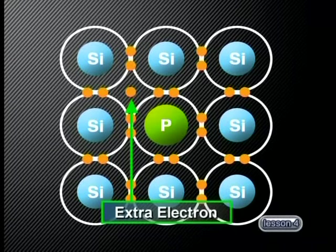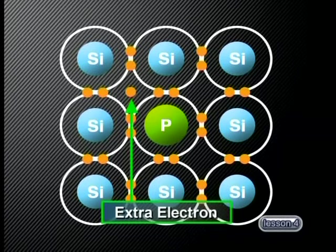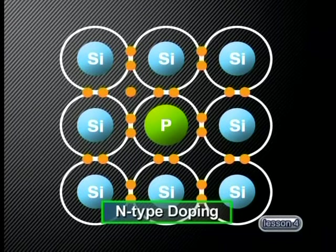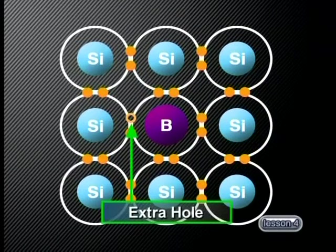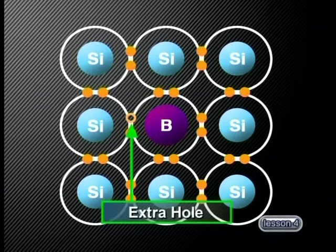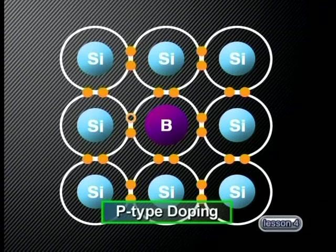The impurity may be an element with one more valence electron than silicon. In this case, an extra electron is added to the silicon lattice, and an n-type semiconductor is formed. But if the impurity is an element with one less valence electron than silicon, there is a shortage of electrons and holes form in the silicon lattice. We say that a p-type semiconductor has formed.